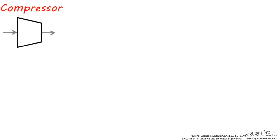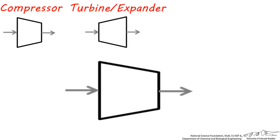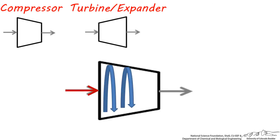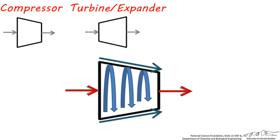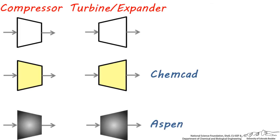These are symbols of compressors and turbines or expanders. This characteristic wedge-like shape came about because of how large process scale axial compressors look when you open up the casing. Gases and vapors are accelerated using rotating blades called rotors, and the gas is compressed by being sent through a tapered channel. In ChemCAD, compressors and turbines are colored, and in Aspen, they're this characteristic gray color.